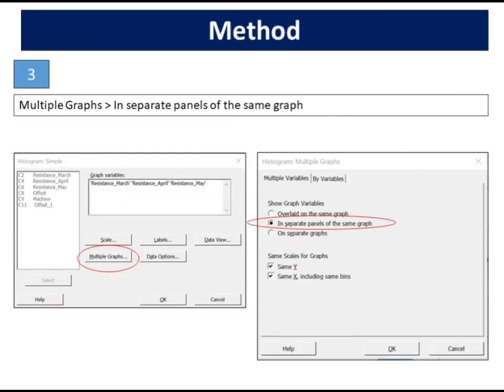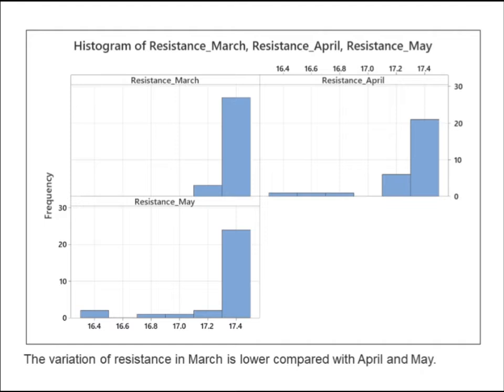In multiple graphs, select in separate panels of the same graph. Click OK. From the histogram, we observe that the variation of resistance in March is lower compared with April and May by assessing the shape and spread of data.